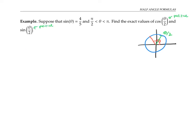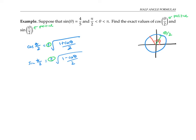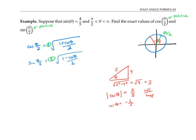Let me write down my half angle formulas — and I know I can use the positive version. Unfortunately, I'm only given the value of sine theta, not cosine theta, so I can't plug in directly. First, I have to use this value to figure out what cosine is. I'll draw a right triangle with angle theta. Since sine of theta is four fifths, I'll label the opposite side four and the hypotenuse five. That means the adjacent side is the square root of five squared minus four squared, which is the square root of nine, which is three. So cosine theta is adjacent over hypotenuse, which would be plus or minus three fifths. Since theta is in the second quadrant, cosine is actually negative three fifths.